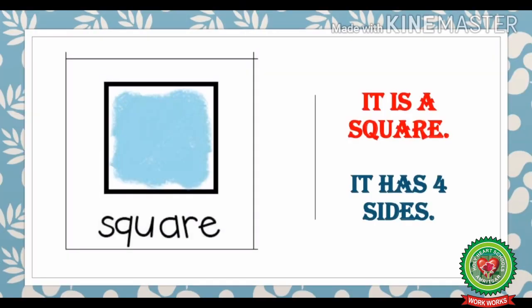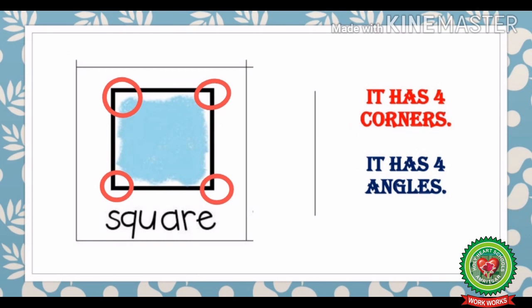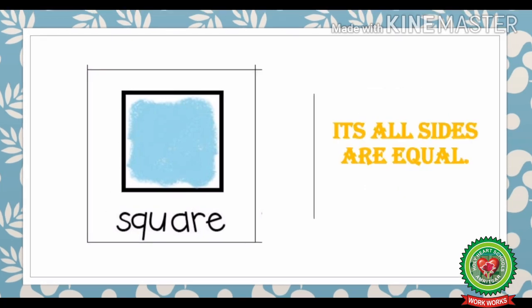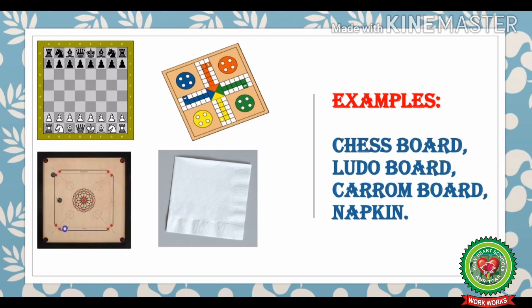Let us first start with square. This is a figure of a square. As you can see, it has four sides, four corners, four angles and all its sides are equal. There are many examples of square like the chess board, Ludo board, carom board or napkin. These things have the shape of a square.